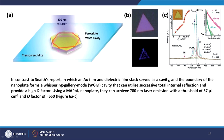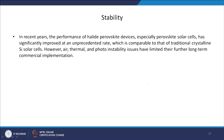The trap states generated by grain boundaries broaden the photoluminescence, resulting in a small full width at half maximum. To overcome grain boundary drawbacks, high quality perovskite nanoplatelets were prepared using a two-step CVT method. In contrast to the Snaith report using gold film and dielectric film stack as a cavity, the boundary of the nanoplate forms a whispering gallery mode cavity that utilizes total internal reflection and provides a high Q factor. Using a MAPbI3 nanoplate, they achieved 780 nm laser emission with threshold of 37 μJ cm⁻² and Q factor of 6650.